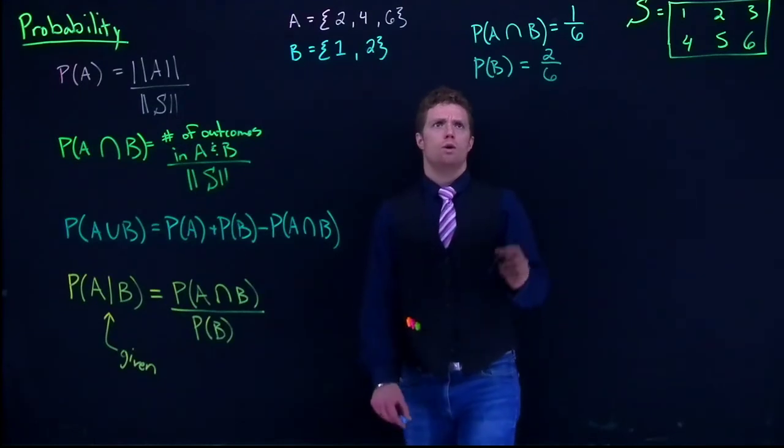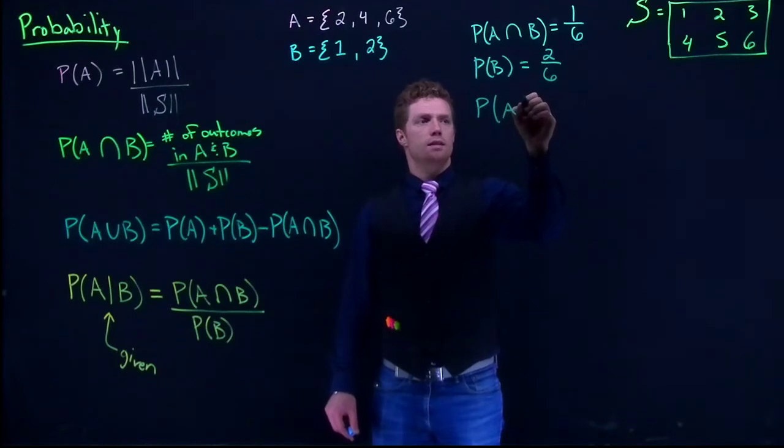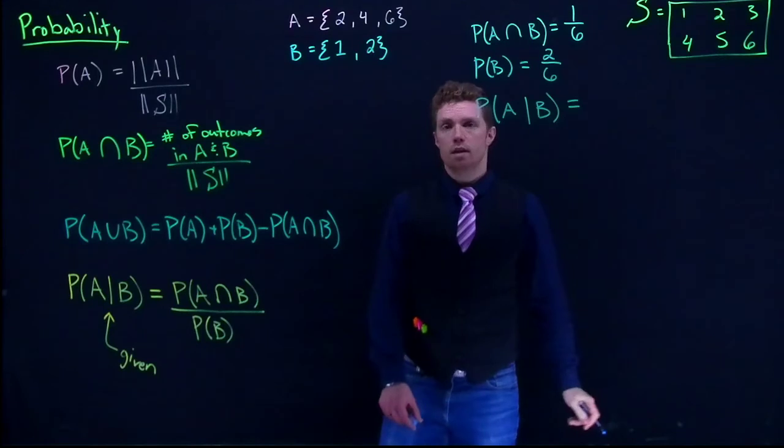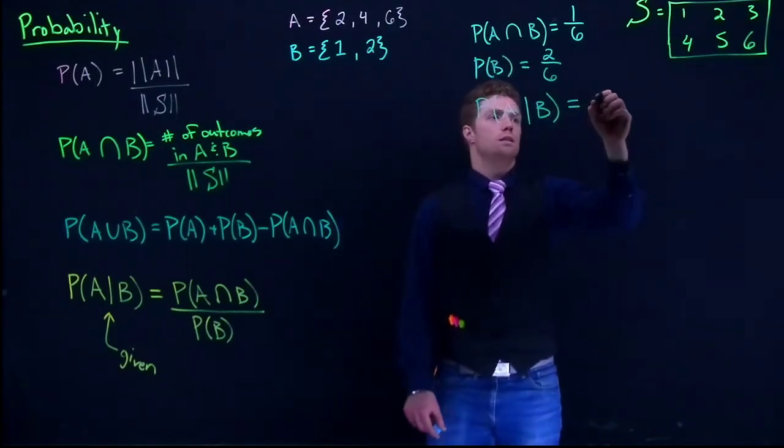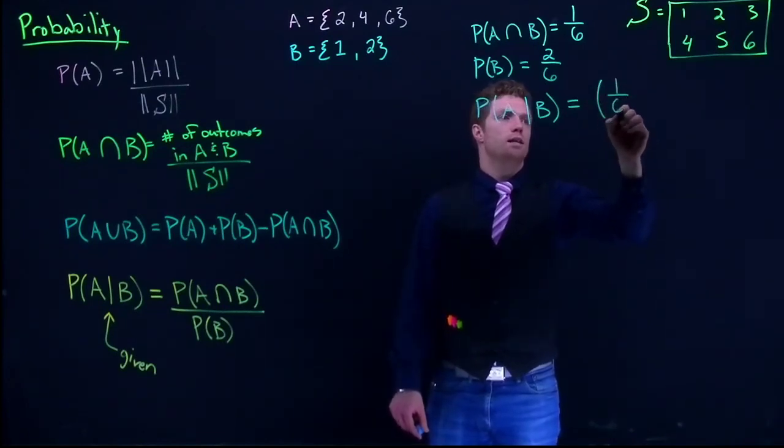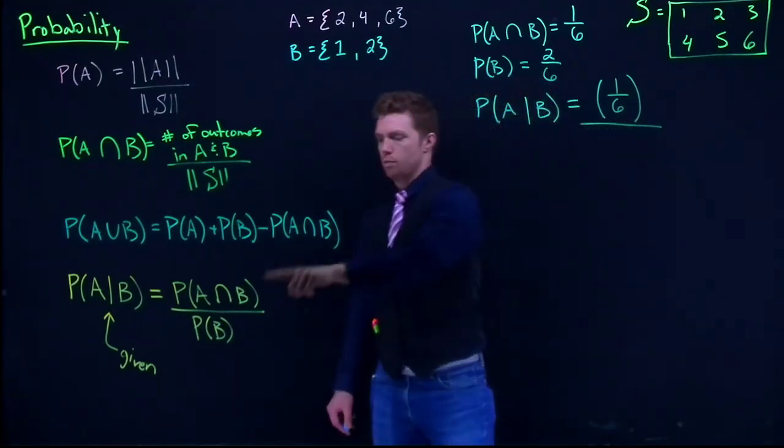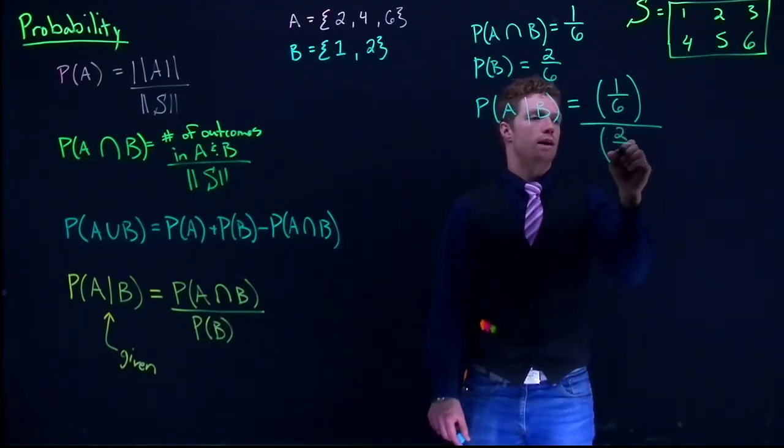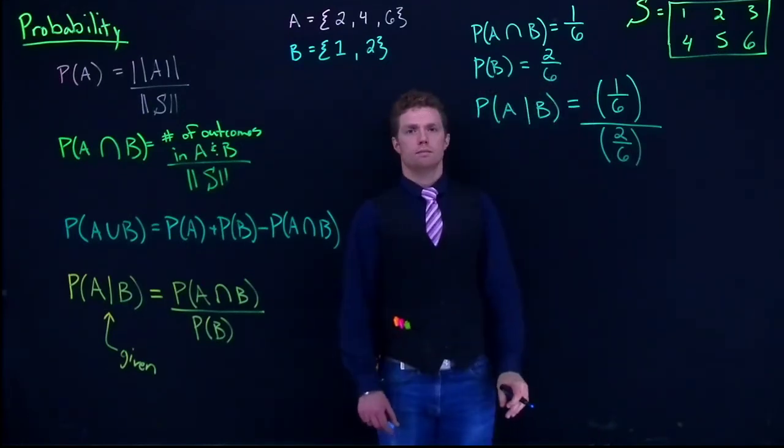Alright, so now we need to find out what is the probability of A given B. So from here what we can do is we can literally take these pieces that we figured out. So first, the intersection. This is going to be one divided by six divided by probability of B. Two divided by six.